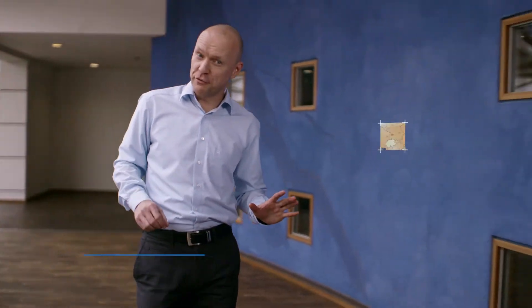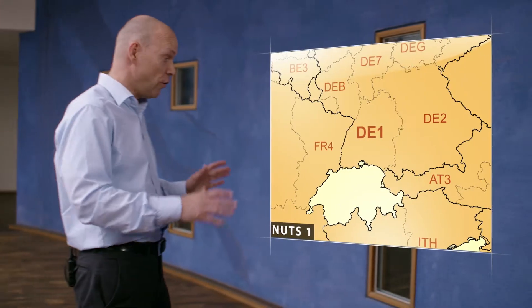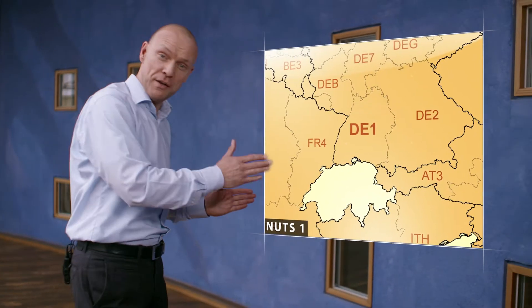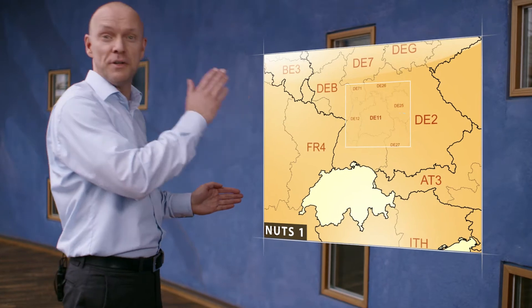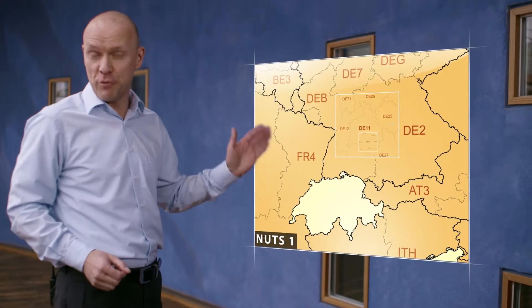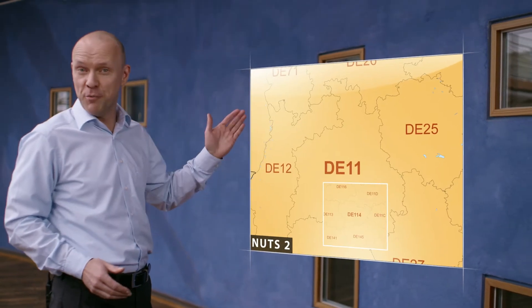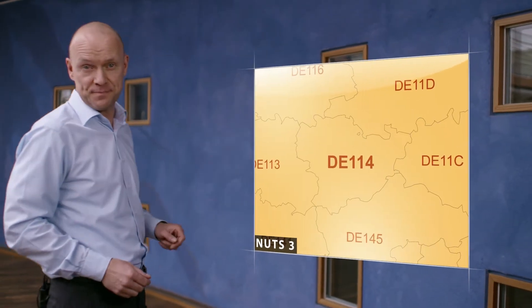The NUTS classification defines regional boundaries within the European Union at three different levels called NUTS 1, NUTS 2, and NUTS 3 — from larger to smaller areas.